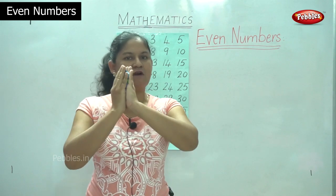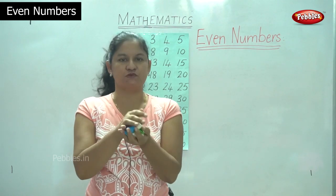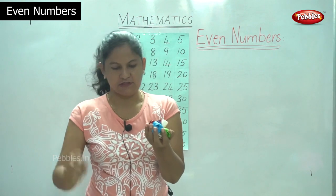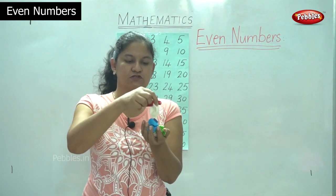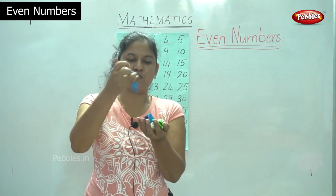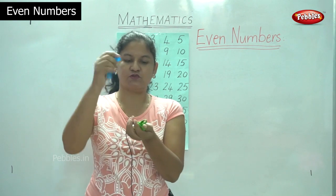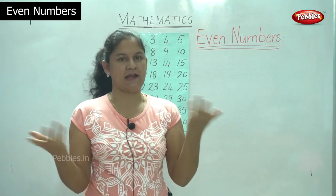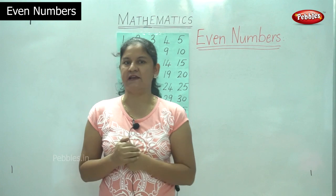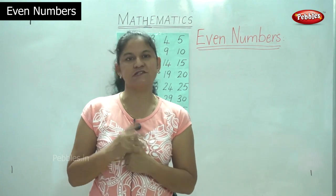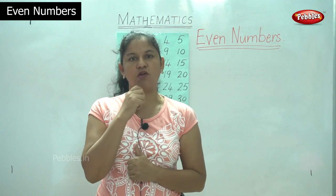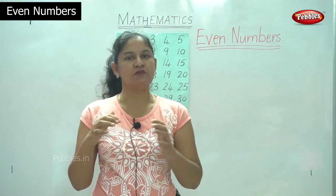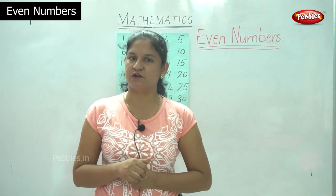I have 10 balloons in my hand and I want to group them in twos. So I will take the first two balloons: 1, 2. The next group: 1, 2. The next group: 1, 2. The next group: 1, 2. And the next group: 1, 2. And I don't have any balloons remaining in my hand. So I have grouped them equally in two. These are called even numbers — numbers that are divisible by two and when you group them you don't have anything remaining.